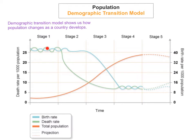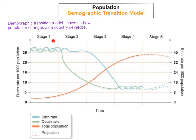First of all, in stage 1, you are least developed — it's very underdeveloped. The overall birth rates and death rates are very high. Both birth and death rates are very high.